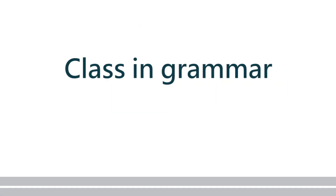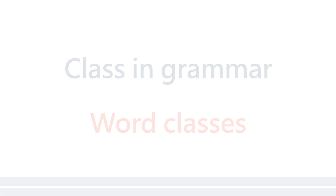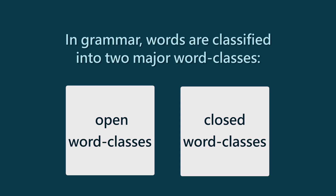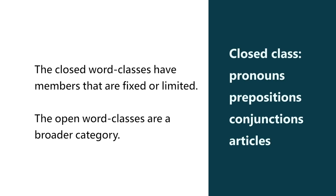In grammar, the different words of the same language are divided into different word classes. First, there is a broad classification of words into open and closed. The closed class of words are fixed or limited in number — which includes pronouns, prepositions, conjunctions, and articles. The open class means words are not limited or fixed in number.